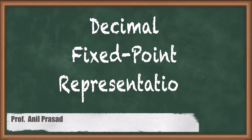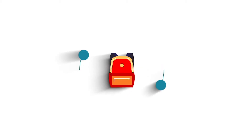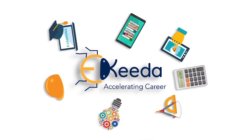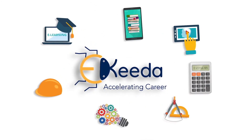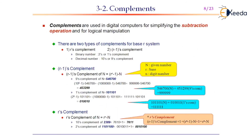In this session, let us deal with decimal fixed-point representation. Before that, let me give a glimpse of what happened in the previous sessions for connectivity. So far we discussed about the complement number systems and how we are going to perform arithmetic subtractions using those complement number systems.